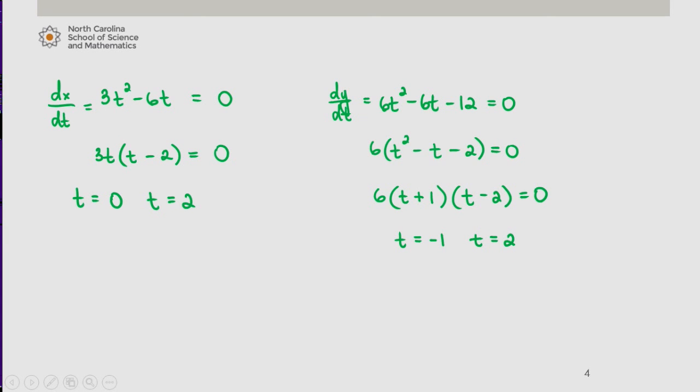Now recall that we wanted to find when dx/dt and dy/dt were both zero. So we see that happens when t = 2. So the particle must be at rest when t = 2.